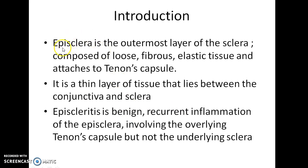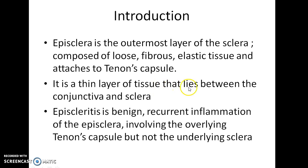What is Episclera? Episclera is the outermost layer of the sclera. It is composed of loose fibrous elastic tissue and it attaches to Tenon's capsule. To make it simpler, it is a thin layer of tissue that lies between the conjunctiva and sclera.